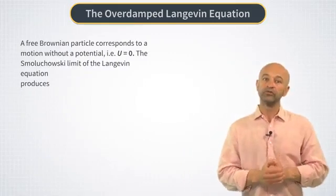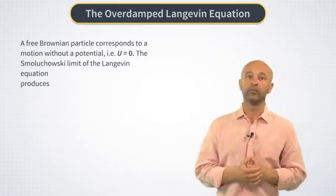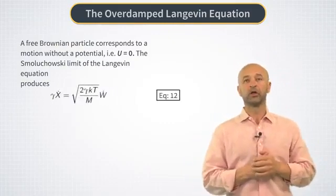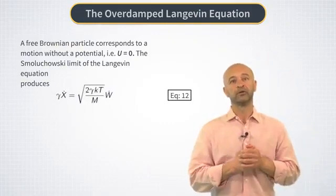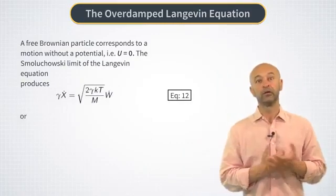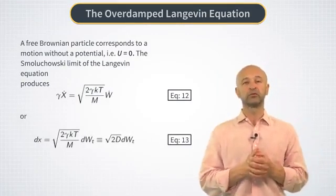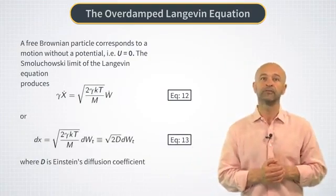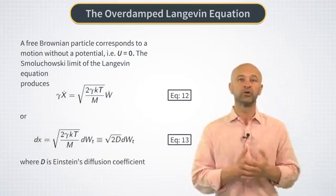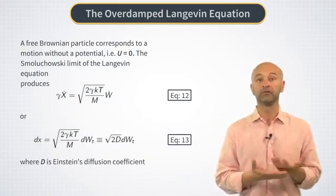If we take the Smoluchowski limit for a free Brownian particle without any potential, we obtain equation 12 on this slide from the Langevin equation. We can rewrite it as shown in equation 13, where the constant d is Einstein's diffusion coefficient. And you can easily recognize in equation 13 the ABM model without a drift.